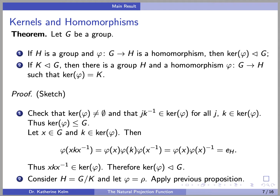For part two, given our previous proposition, this is easy to prove. Consider H to be the quotient group G mod K and let phi be equal to the natural projection function rho. Then the previous proposition tells us that rho is a surjective group homomorphism from G to G mod K, whose kernel is K.